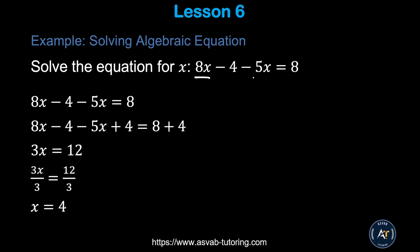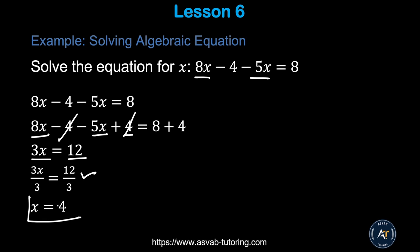Now solve another problem where there are two variable terms. First simplify by combining like terms: 8x and 5x combine to give 3x. Then eliminate the constant by adding 4 to both sides (using the opposite operation), so −4 cancels out. That gives 3x = 12. Divide both sides by 3, so x = 4.